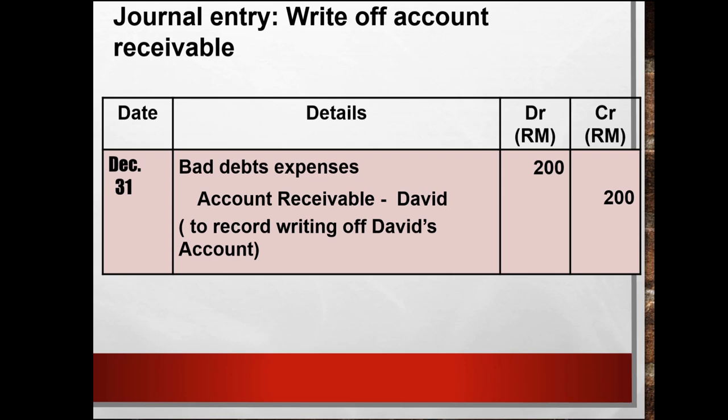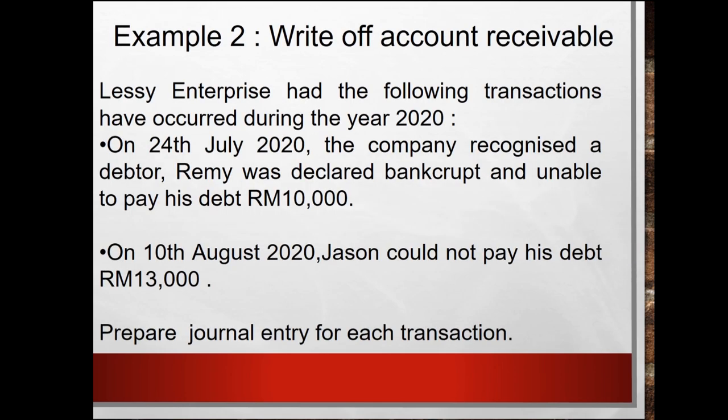Now look at Example 2: write-off of accounts receivable. Let's see — an enterprise had the following transactions that occurred during the year 2020. On 24 July 2020, the company recognized that debtor Remy was declared bankrupt and unable to pay his debt of RM10,000.